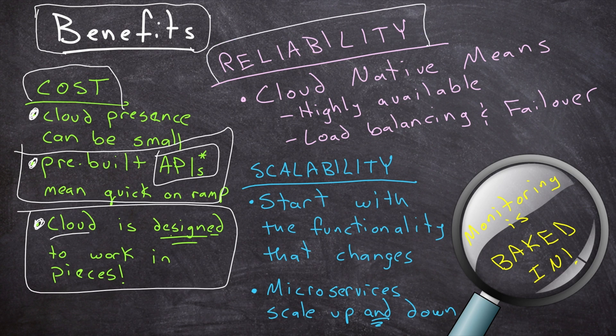Reliability is another advantage. Cloud native means it's highly available by default because you have more computers available than you could ever use. If an entire data center goes down, you don't have to worry about fixing it - that's your cloud provider's job - and you'll instantly be moved to another data center. You have high availability, load balancing, and failover built in because of the massive infrastructure that cloud providers have, without having to buy lots of new hardware.